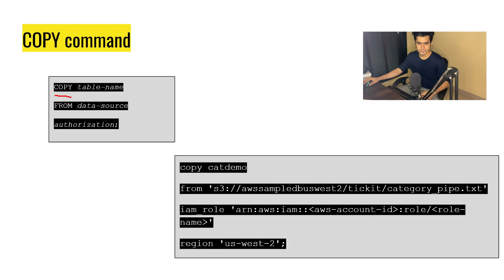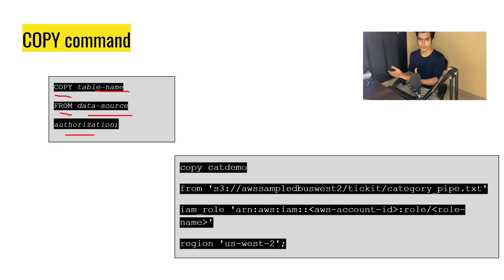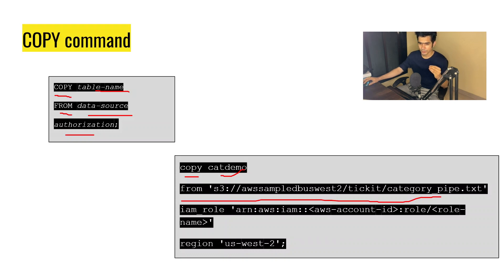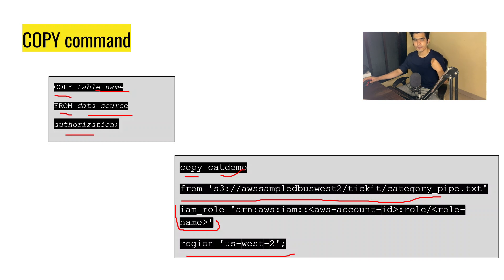This is what the syntax of the COPY command looks like. You write COPY, then the table name inside Redshift, FROM the data source, and provide some kind of authorization such as the IAM role. For example: COPY cat_demo FROM the S3 source path, with the IAM role information, and at the end you provide the region from where you are pulling the data. This is your COPY command.